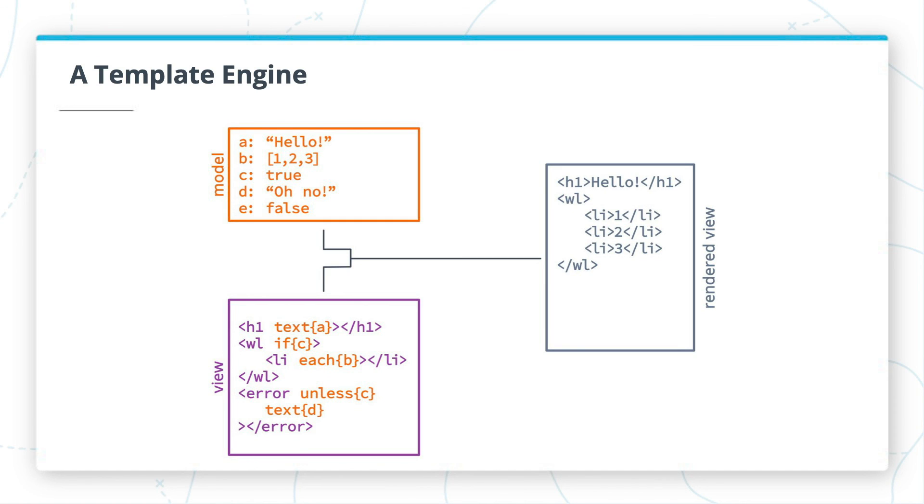In fact, we can even write some basic code in these attributes using a notation called Spring EL or Spring Expression Language, which is documented on the Spring website. There's a link in the text below.